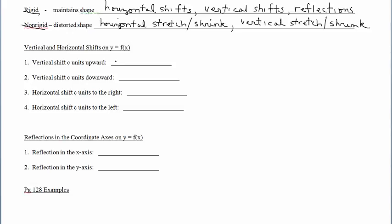Let's say we start with some function h. We're going to base everything off of the f graph. A vertical shift c units upward — if I start with an f of x graph and shift it up c units, the new function h of x would be f of x plus c. For c units downward, h of x would be f of x minus c.